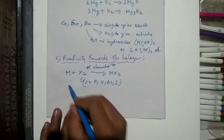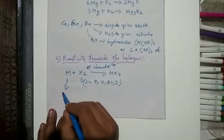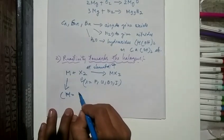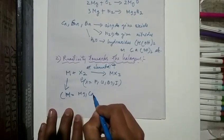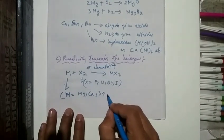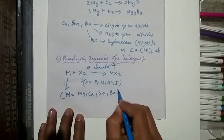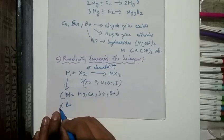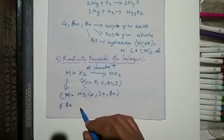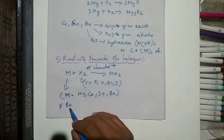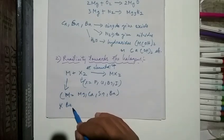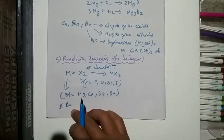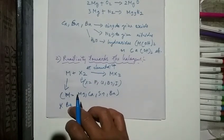This M can be Mg, Ca, strontium, and barium — except for Be. For beryllium, we need to use different methods to prepare beryllium halides.